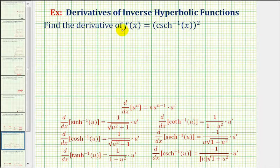We want to find the derivative of f of x equals inverse hyperbolic cosecant of x raised to the second power. The first thing we should recognize is that f of x is a composite function, so we'll have to apply the chain rule in order to find our derivative.